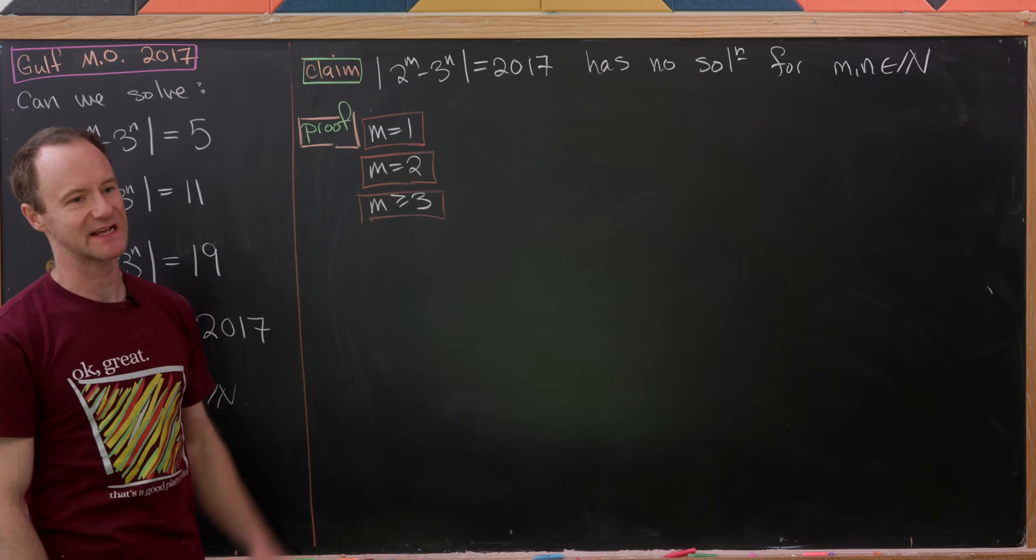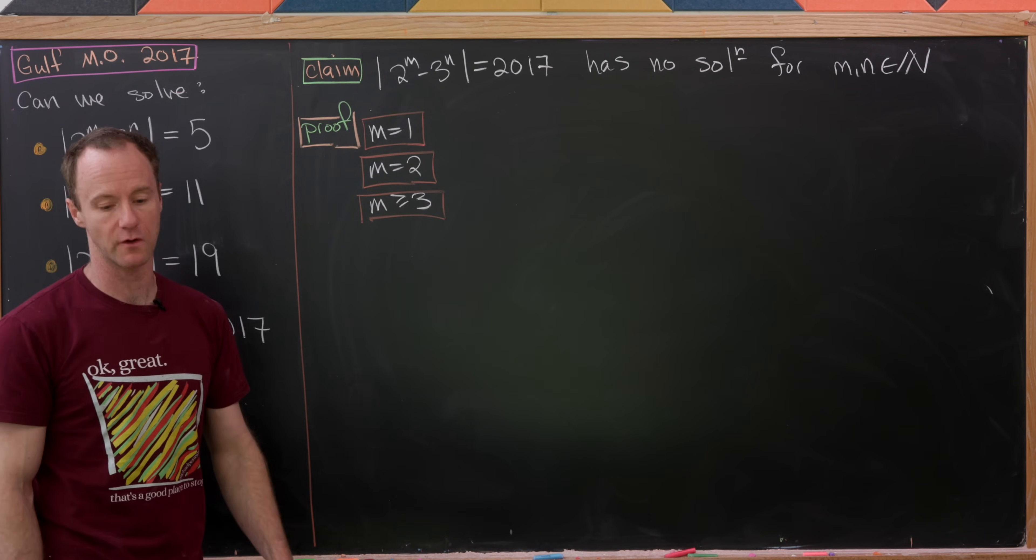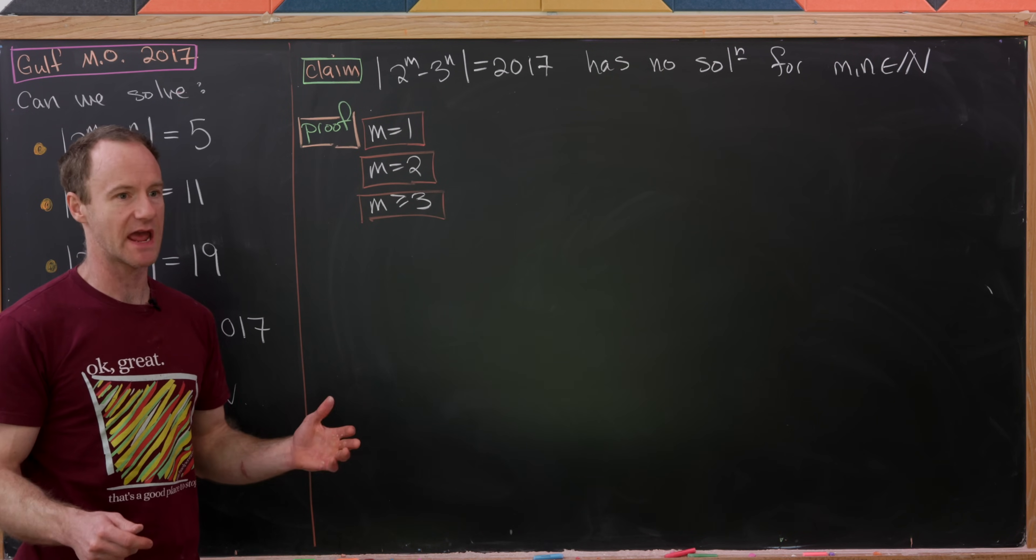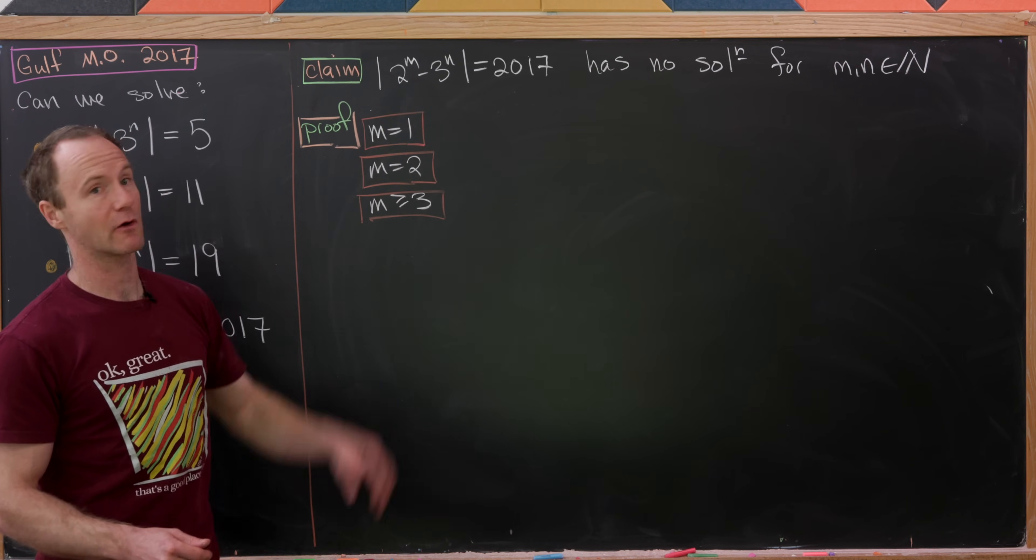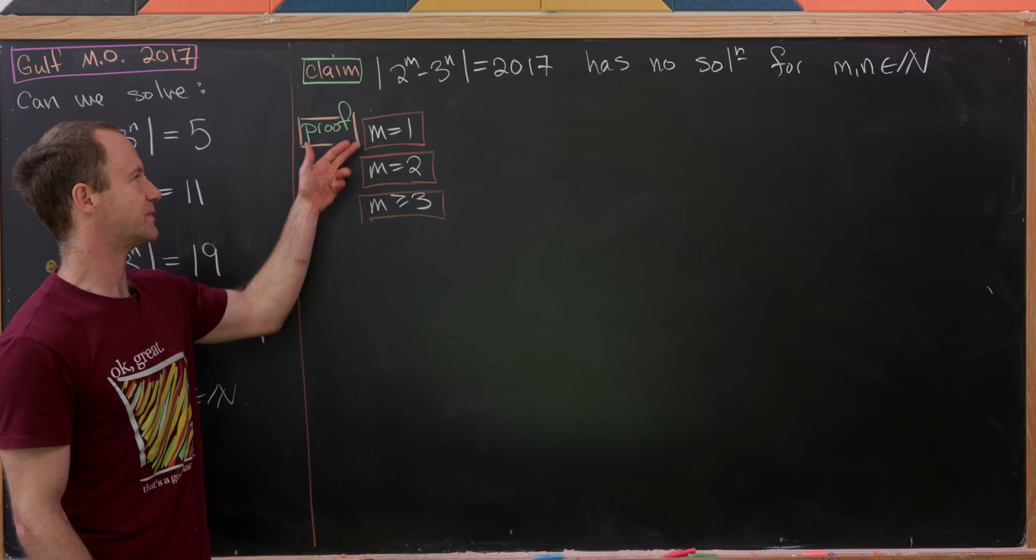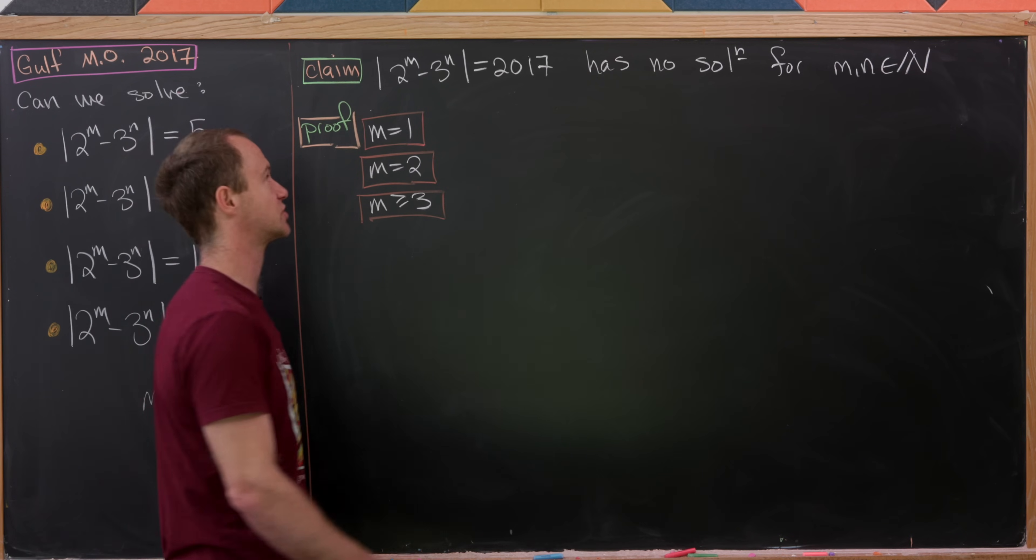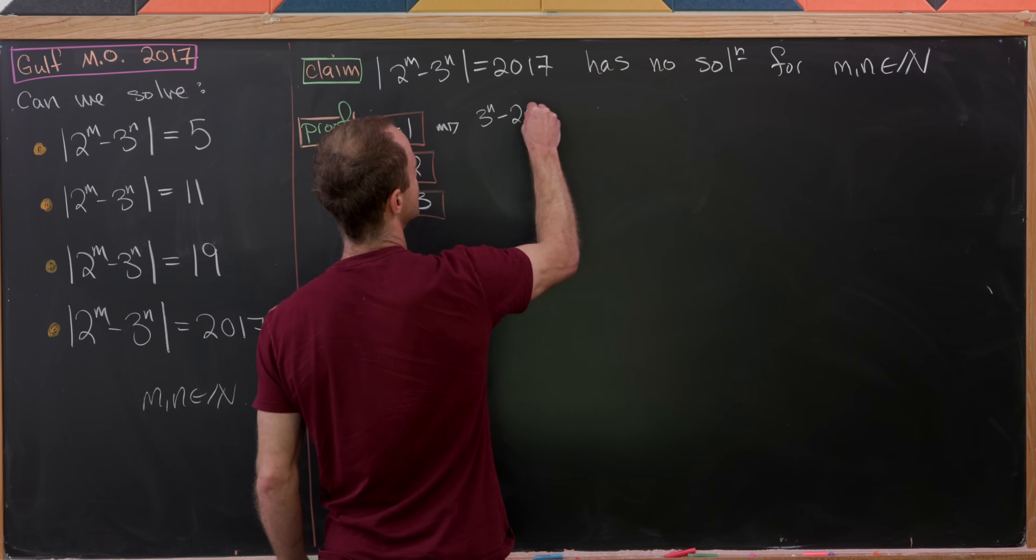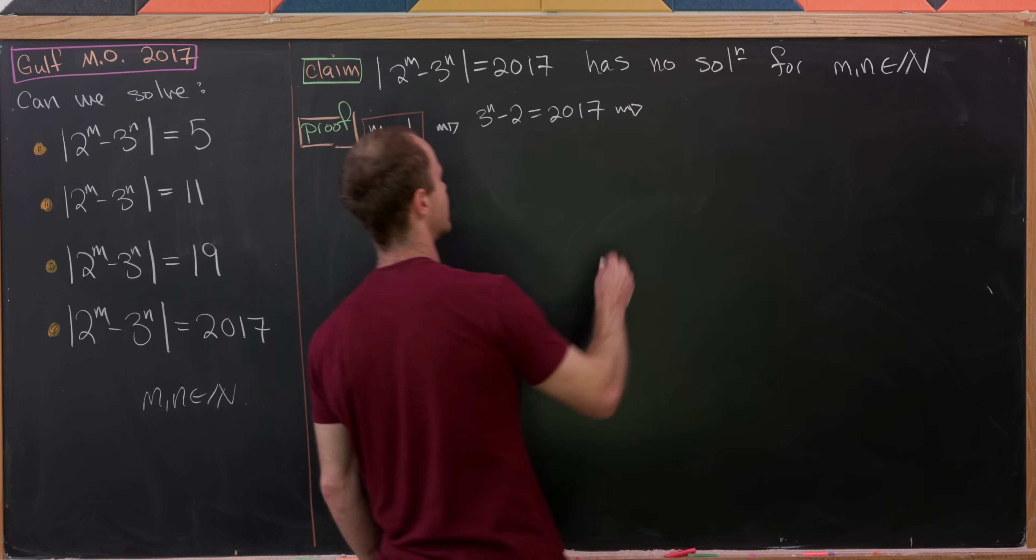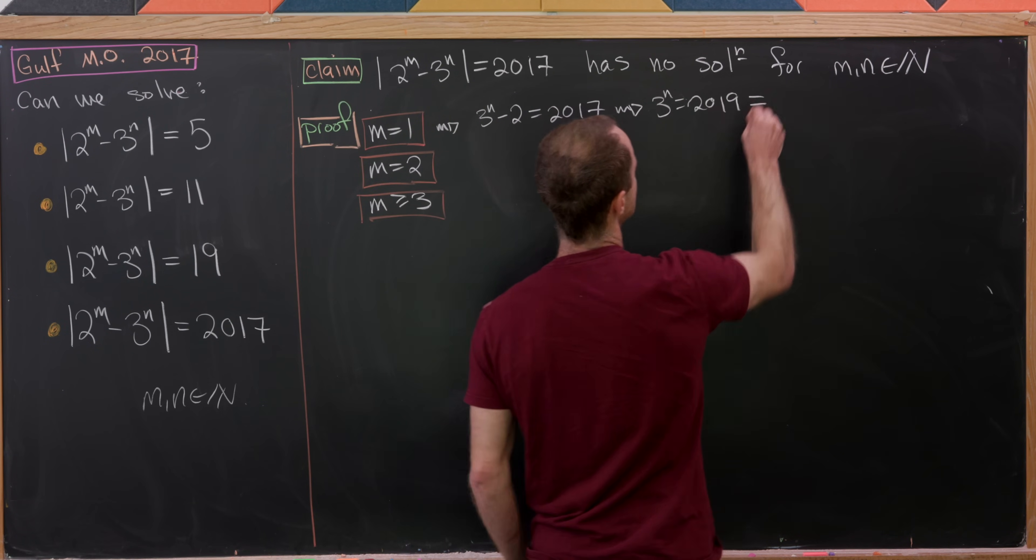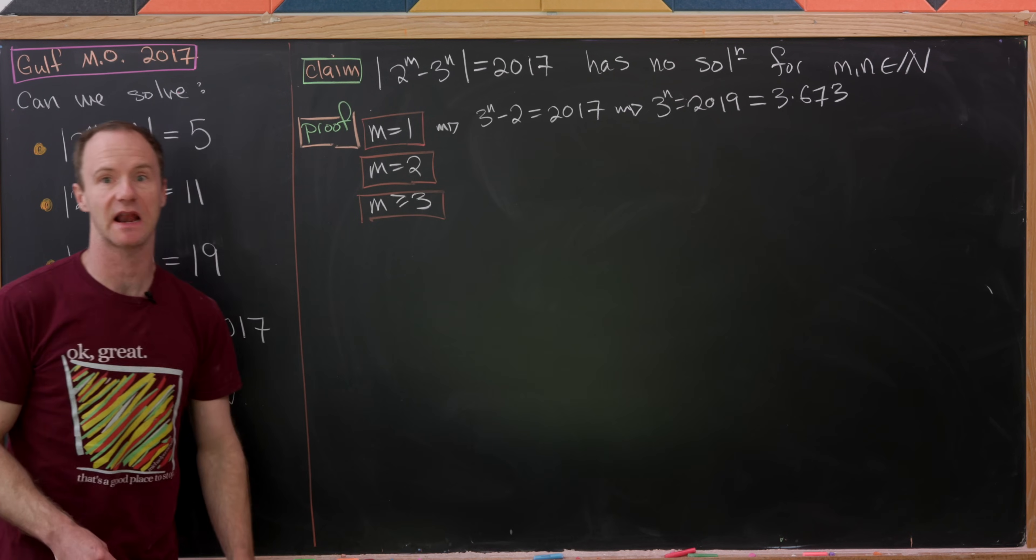On the last board we've motivated this guess which we'll prove as a claim and that is the absolute value of 2 to the m minus 3 to the n equals 2017 has no solution over natural numbers. And since we looked mod 8 on the last board we probably want to look mod 8 here. But that's a little sticky if this power of 2 is not a multiple of 8 which tells us we should potentially split the cases when m is equal to 1 and 2 off separately. So let's look at the case when m is equal to 1. 3 to the n minus 2 is equal to 2017. The power of 3 will clearly be larger here. But that will give us 3 to the n is equal to 2019. But 2019 factors nicely as 3 times 673 which is prime. Well that's most definitely not a power of 3.